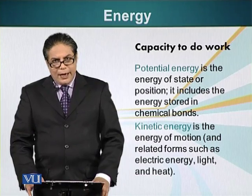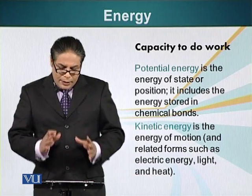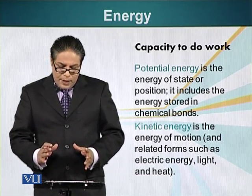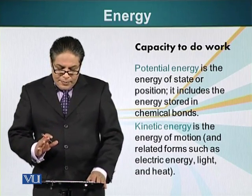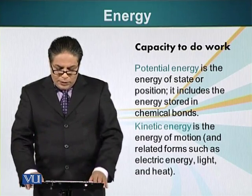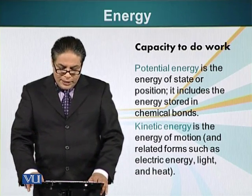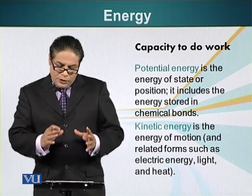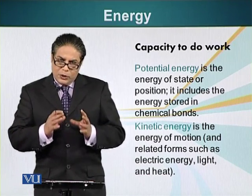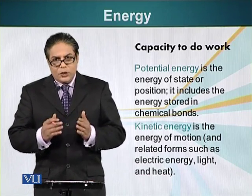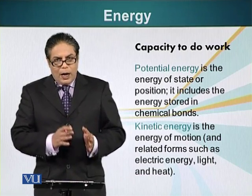Physicists describe energy as the capacity to do work. There are two different types of energy: potential energy and kinetic energy. Kinetic energy is the energy of motion, such as light, electricity, and heat. Potential energy is the energy of state or position. For biologists, it is important because it is also the energy stored between high-energy bonds — for example, carbon-carbon bonds or carbon-hydrogen bonds.